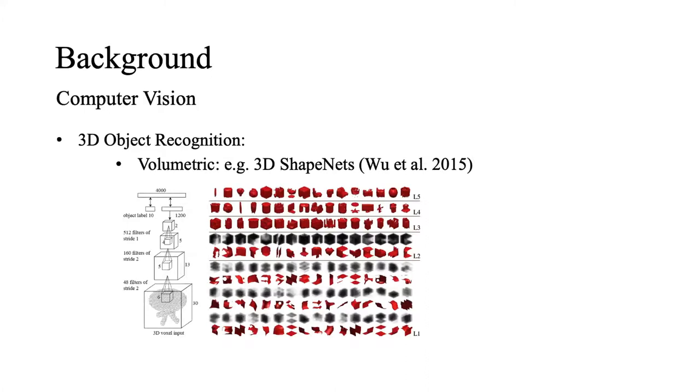Additionally, in the field of 3D object recognition, different 3D data representations have been widely explored. Earlier studies focus on volumetric representations. Although it does not explicitly design any view invariant features, the classification and retrieval results have outperformed some of the rotation invariant features, such as spherical harmonic features.